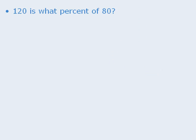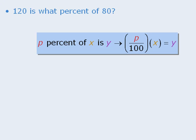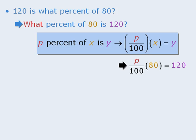Let's try one last question. To apply our rule, it's a good idea to rewrite the question in the same format: what percent of 80 is 120? We can now plug the corresponding values into the formula to get p over 100 times 80 equals 120, which we could solve for p.